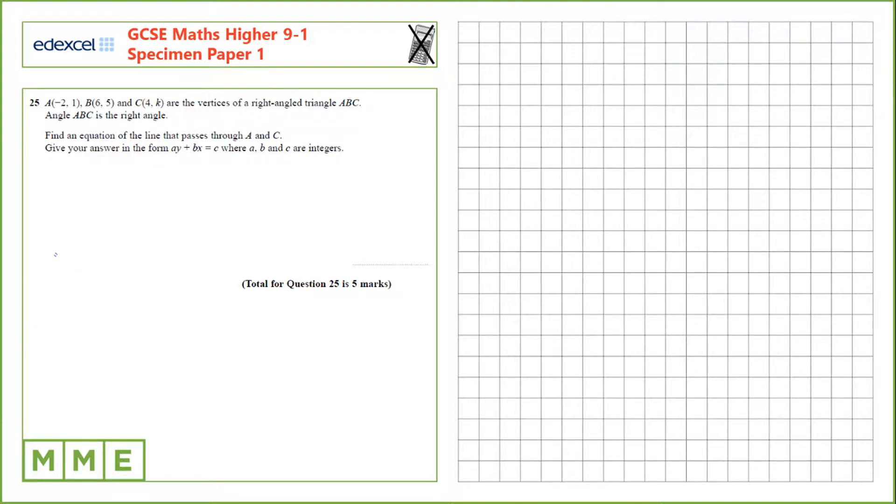Let's draw a sketch. So if we've got our triangle here, we know that the right angle is ABC. We call it A, C. A is at minus 2, 1, B is at 6, 5, and C is at 4, K.